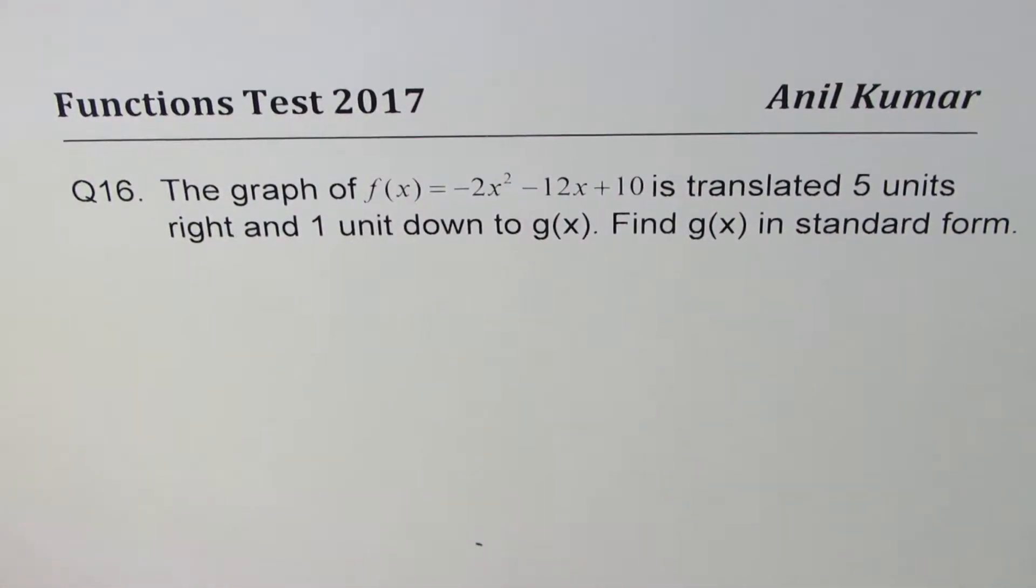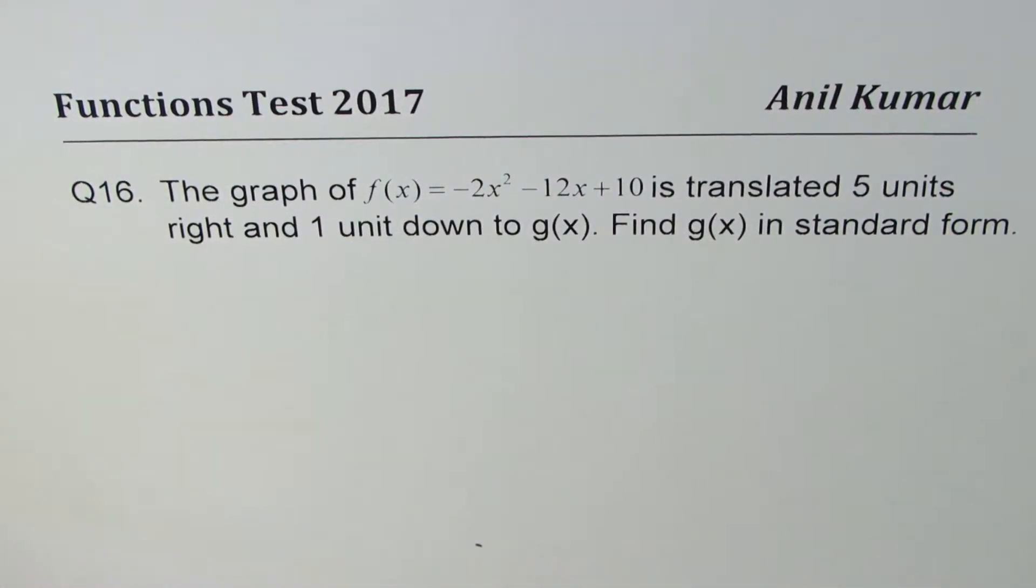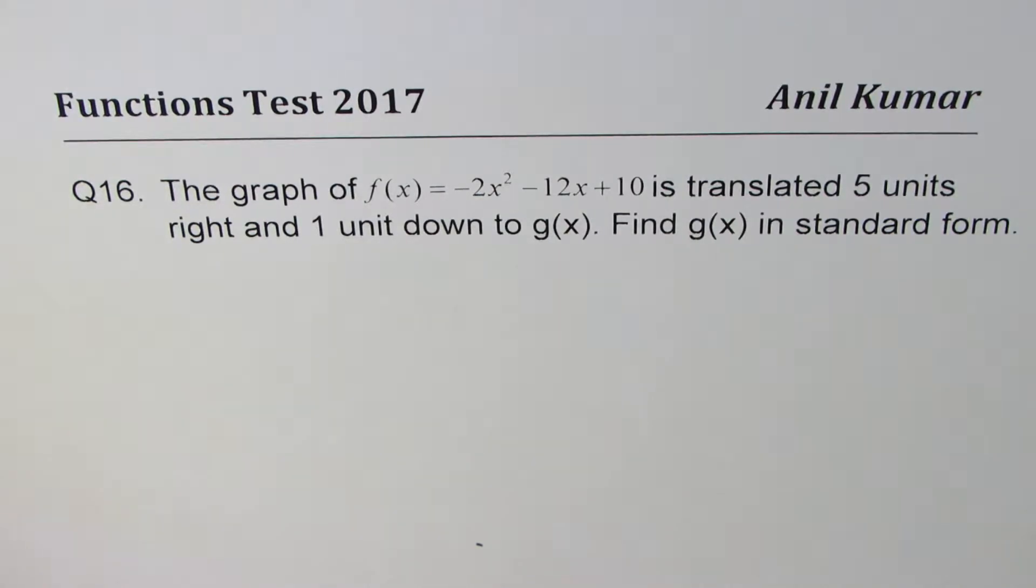I'm Anil Kumar sharing with you one of the most interesting questions from this question paper, Functions 2017. Question number 16: The graph of f(x) = -2x² - 12x + 10 is translated five units right and one unit down to g(x). Find g(x) in standard form.